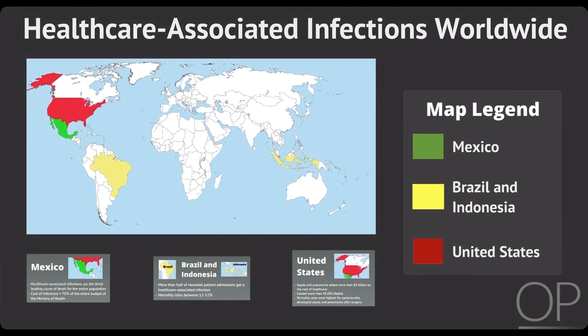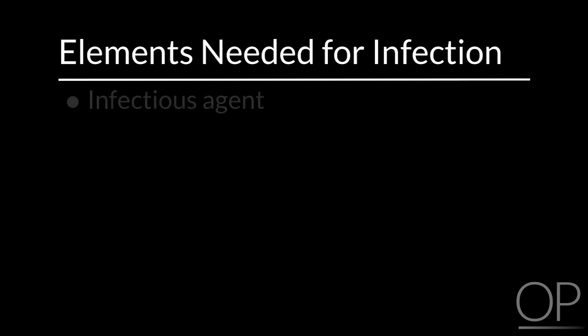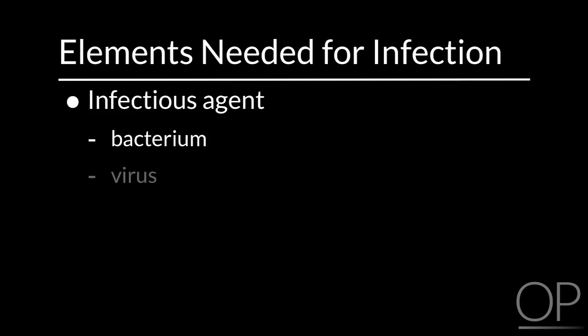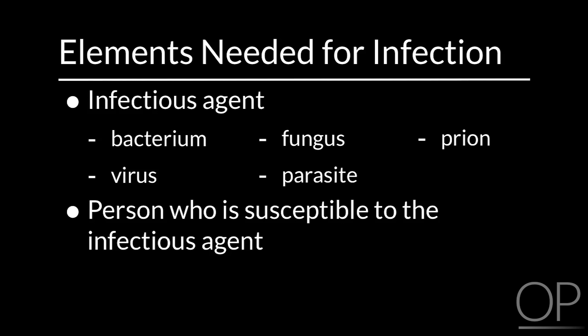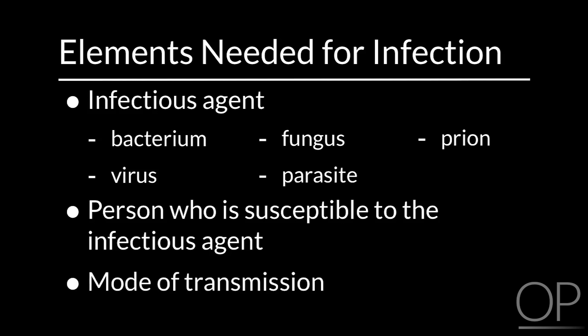What is needed for an infection to occur? There are three basic elements needed for infection. First, there must be an infectious agent such as a bacterium, virus, fungus, parasite, or prion. Sources of infectious agents include humans, animals, and the environment. Second, there must be a person who is susceptible to the infectious agent. And finally, the mode of transmission is the way that an infectious agent gets to a susceptible host. The mode of transmission is the key element in breaking the cycle of infection, and most infection prevention practices are designed to target this element.